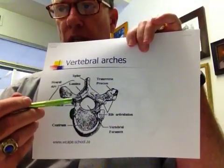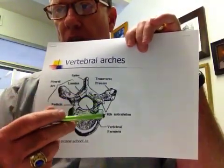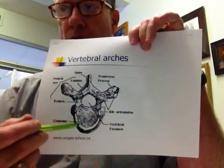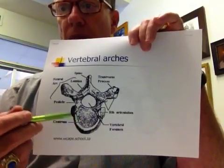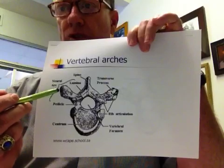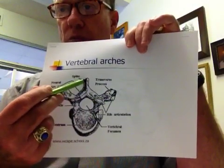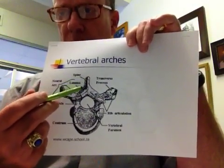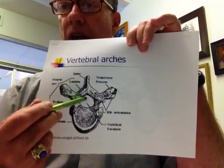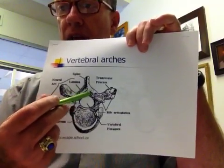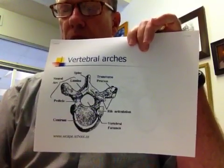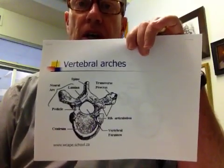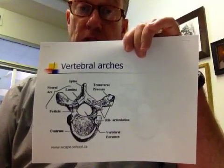This is a lumbar vertebra. You know the centrum or the vertebral body, the transverse processes, spinous process, and then the lamina and the pedicles. Those will come into play when we talk about surgical procedures for reduction or discectomy.